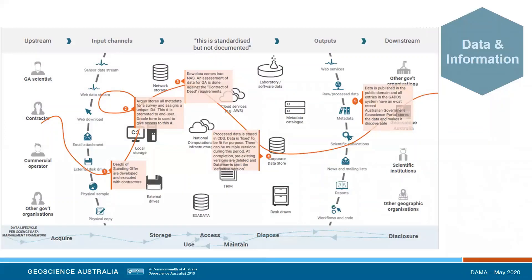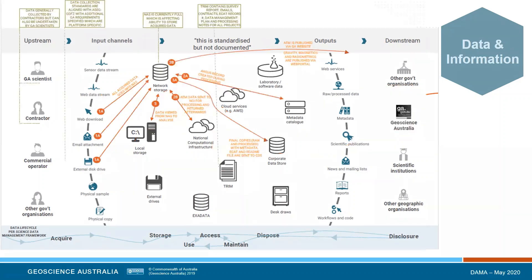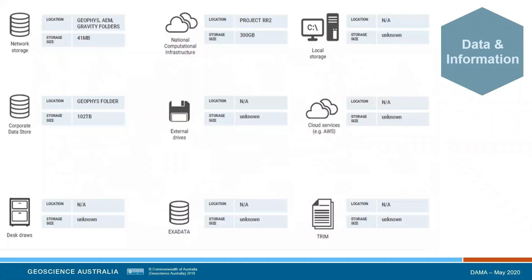Geoscience Australia has a variety of data types that it collects. I was in a meeting where the infrastructure architect was trying to get a handle on all the different data types and formats across GA and I think they stopped counting after about 200. This includes discrete and continuous datasets at different stages of processing. It looks fairly straightforward on this diagram going through upstream to downstream data information products. This is no different from most science organisations and wherever possible we seek to learn from others' experiences in data discovery and access. For example, 102 terabytes in our data store as opposed to 300 gigabytes delivered through external national computational infrastructure.